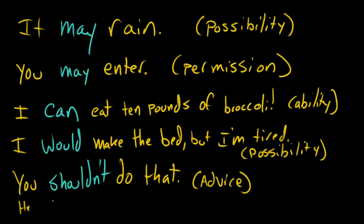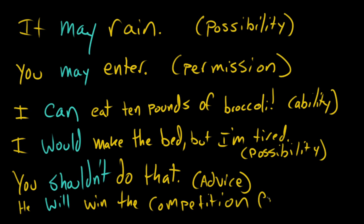And something that is special to 'will,' and to a lesser extent 'shall,' is that they can form the future. Shall used to be a lot more popular, and it still is in British English, but less so in standard American. So you would say, 'He will win the competition,' or 'He shall win the competition.' Use of these modal verbs indicates that what you're talking about is happening in the future. These verbs are very powerful. You should learn how to use them. And in fact, if you can complete the exercises, then you will master these tricky verbs. You can learn anything. David out.